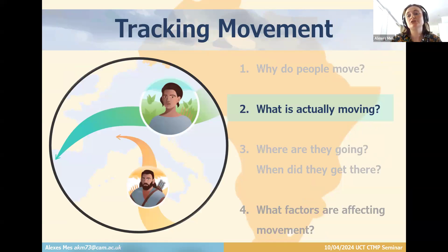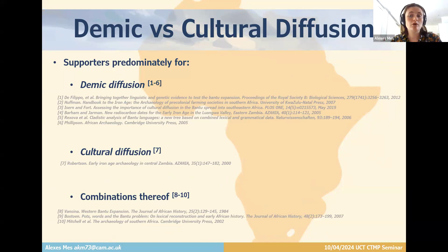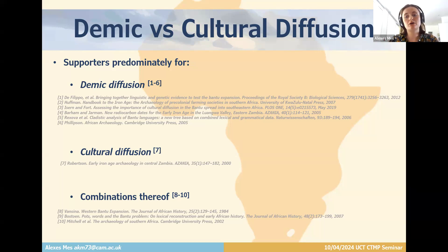Considering what is actually moving: as in all large-scale human dispersals, there's a body of literature seeking to categorize movement as demic diffusion, cultural diffusion, or combinations thereof. Linguistic, genetic, and archaeological evidence all play a part in helping us understand the Bantu expansion. What emerges are complex pictures of movement, and I've put on screen a few papers from archaeologists, linguists, and geneticists who have all weighed in on this debate.